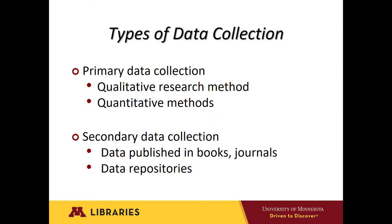Primary data collection, by definition, is a gathering of original raw data collected at the source by a researcher for a specific research purpose. There are a number of different ways in which primary data can be collected. Some techniques for collecting primary data include questionnaires, experiments, and surveys. Secondary data refers to data that was originally collected by governmental agencies, organizations, or data that was collected for other research purposes and has been made available to other researchers. Secondary research includes data published in research reports, health records, data repositories, and similar resources.